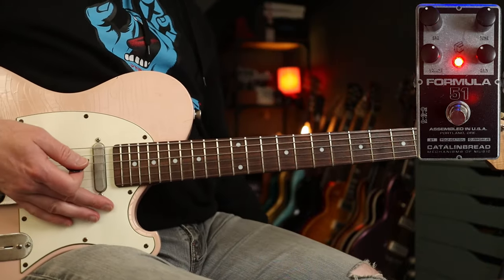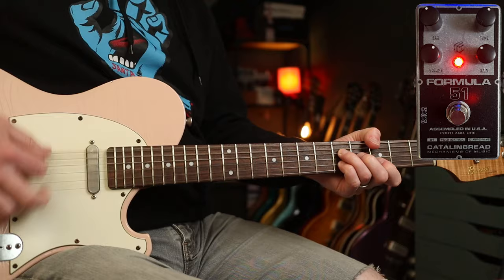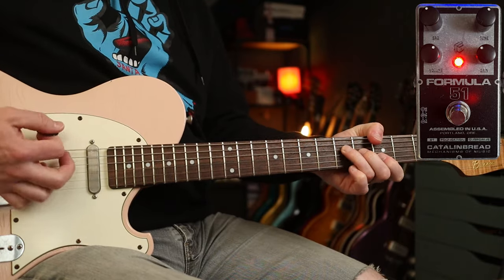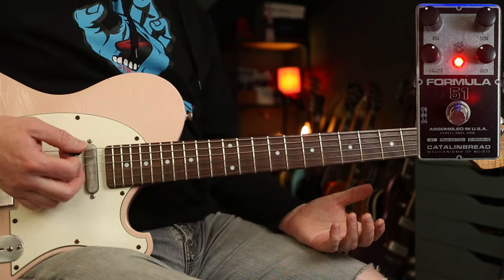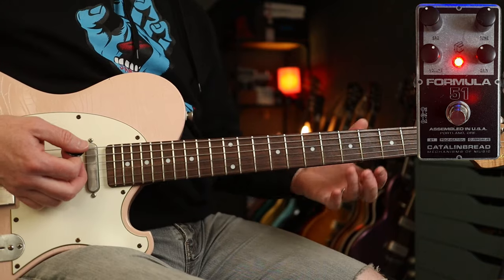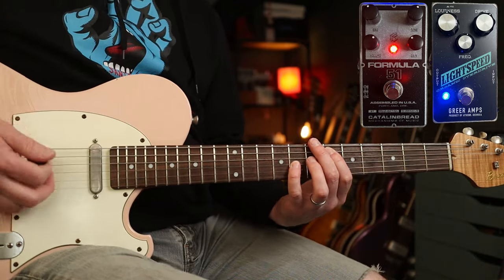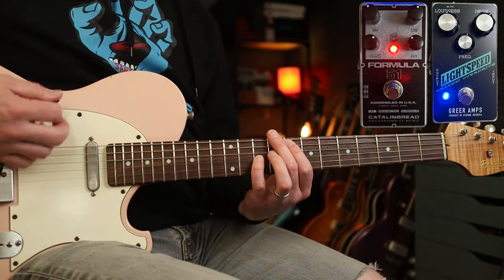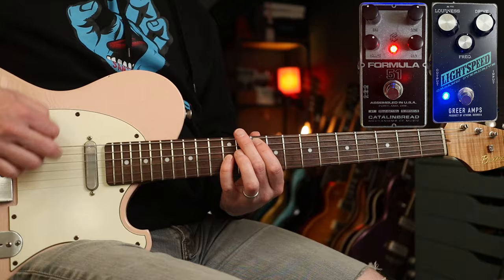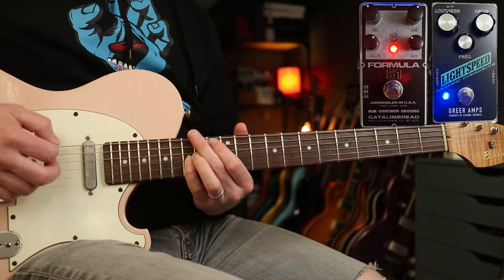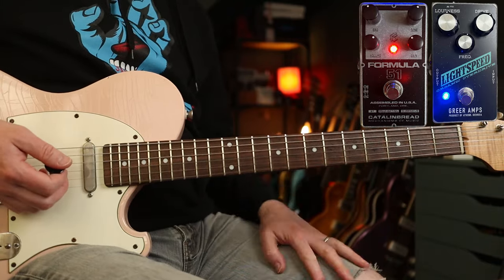Now for the main tone, I'm using the Formula 51 from Catalinbread. Gives it a really interesting gritty tone, I think, which is close, and then for the other part, I'm just popping on the Lightspeed from Greer Amps. So those are my tones.